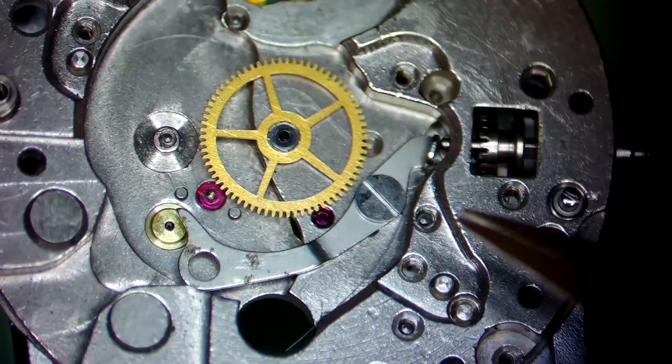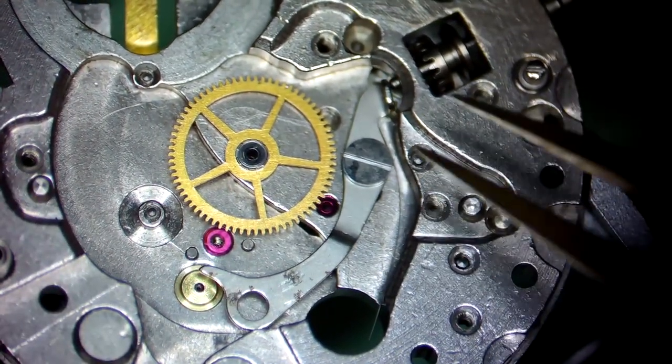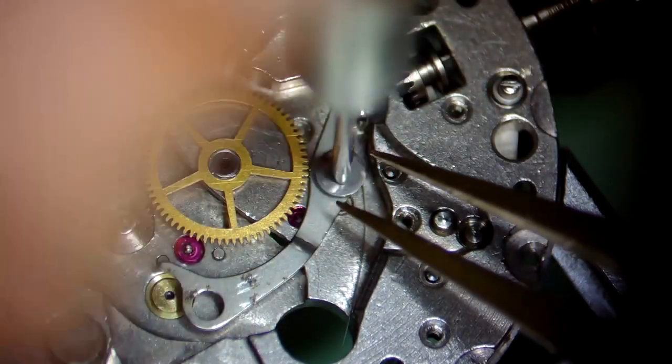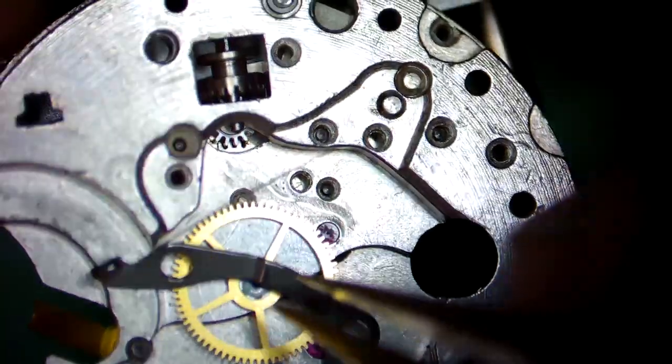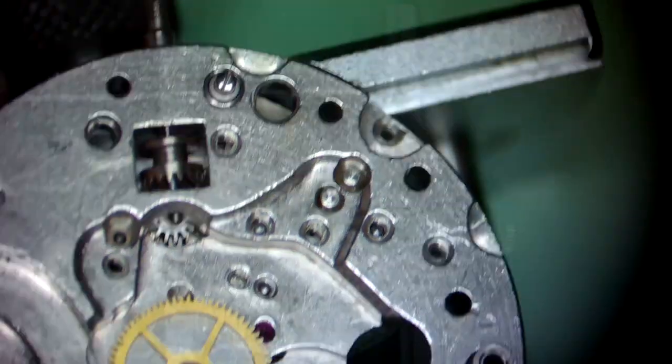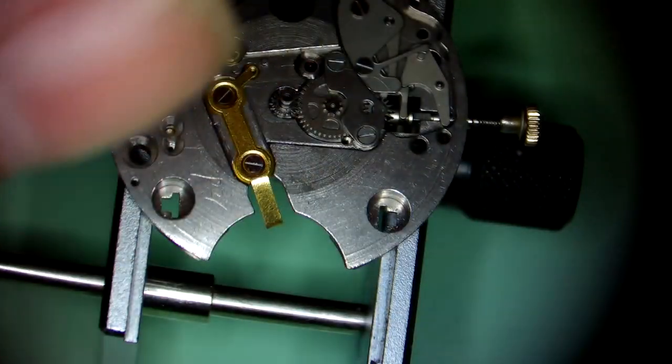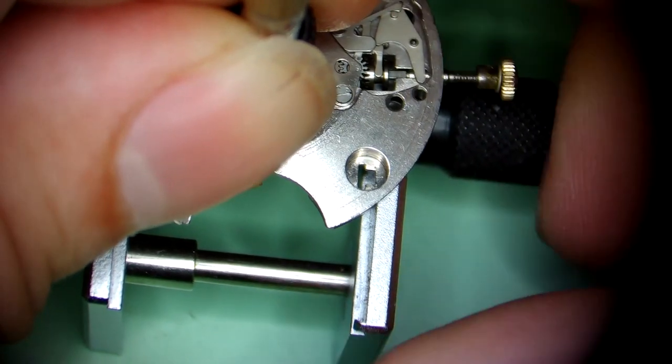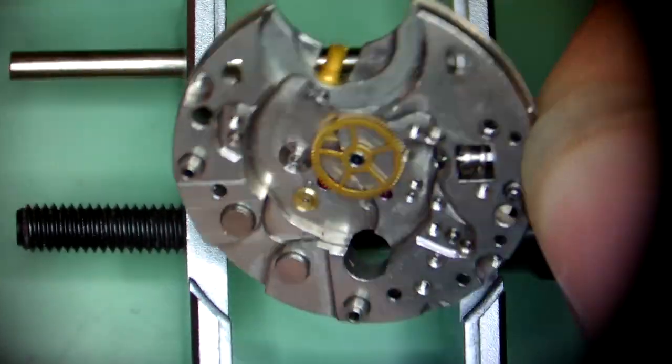This little duck-looking piece serves two purposes. The watch is a hacking device, so when you pull the crown, the watch does stop, which is very important because it's a battery-run watch. When you stop it, it saves the battery. But also, the way that little duckbill on the end is created, when you push the stem back in, it shoves the balance in such a way that it gets the balance running. It's almost like the balance needs a little kickstart to get going.